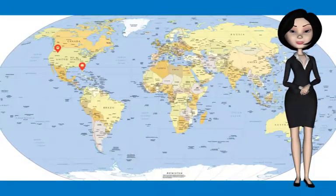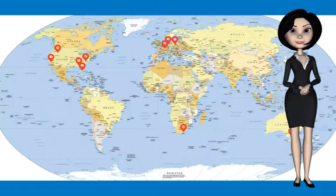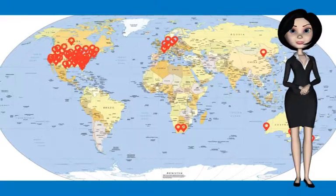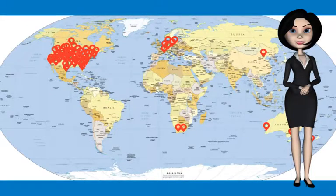QR Inventory is an inventory and asset management system used by hundreds of businesses across the world, from the United States and Canada to Europe, Australia, and New Zealand. Originally we created QR Inventory for small and medium-sized companies. However, today our largest customer has upwards of 1,500 users, and they are not alone. Many QR Inventory customers are large enterprises that successfully use our software, often integrated with ERP and MRP systems. At the same time, small and medium-sized businesses still constitute the majority of QR Inventory users.